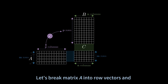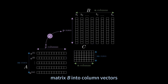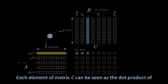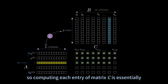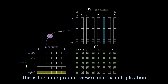Let's break matrix A into row vectors and matrix B into column vectors. Each element of matrix C can be seen as the dot product of a row from matrix A and a column from matrix B. Computing each entry of matrix C is essentially computing an inner product. This is the inner product view of matrix multiplication.